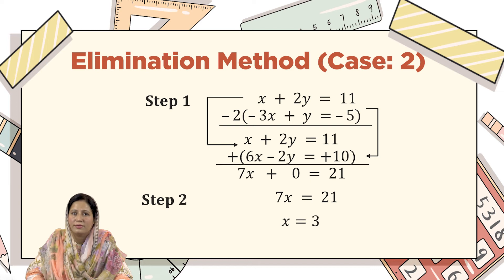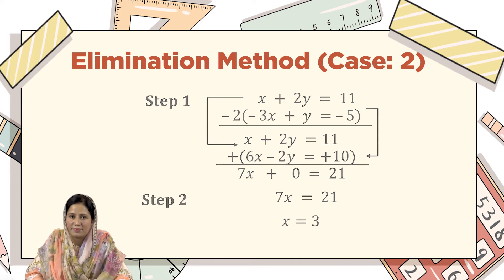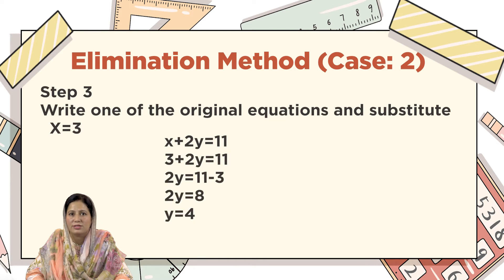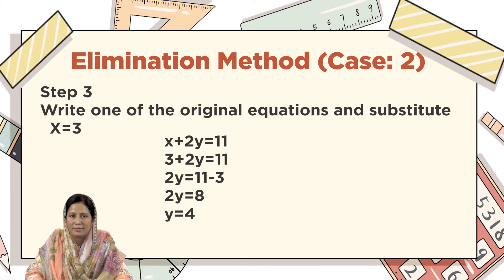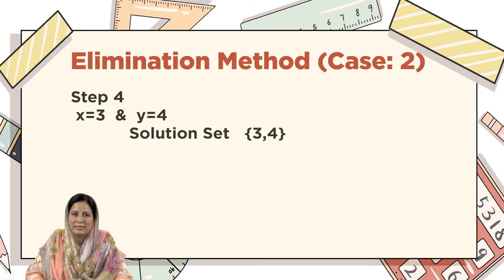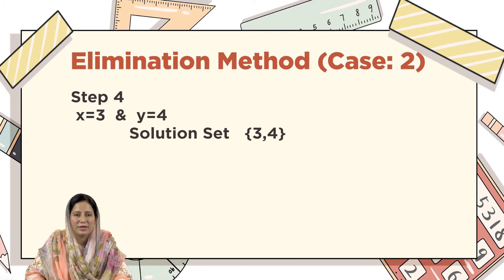After solving it with the first equation, we get the value of x. In step 3, we substitute this value into any one of the given equations. I have substituted x equals 3 into x plus 2y equals 11. At the place of x I substituted the value 3, then I get the value y equals 4. In step 4, we write the solution set in brackets: the value of x is 3 and the value of y is 4.